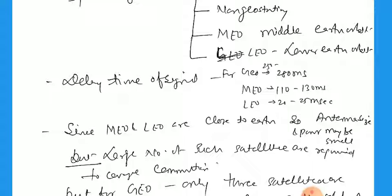Now, the delay time of the signals. The delay time means from the transmitted signal up to the received signal. Geostationary satellites are far away — 36,000 kilometers from the earth surface — so they take more time, approximately 250 to 280 milliseconds. This creates a time lag between the transmitted and received signals, which creates a problem. For MEO, the time lag is 110 to 130 milliseconds. For LEO, which is very close to the earth surface, the time lag is 20 to 25 milliseconds. Since MEO and LEO are close to earth, the antennas and power required may be small.